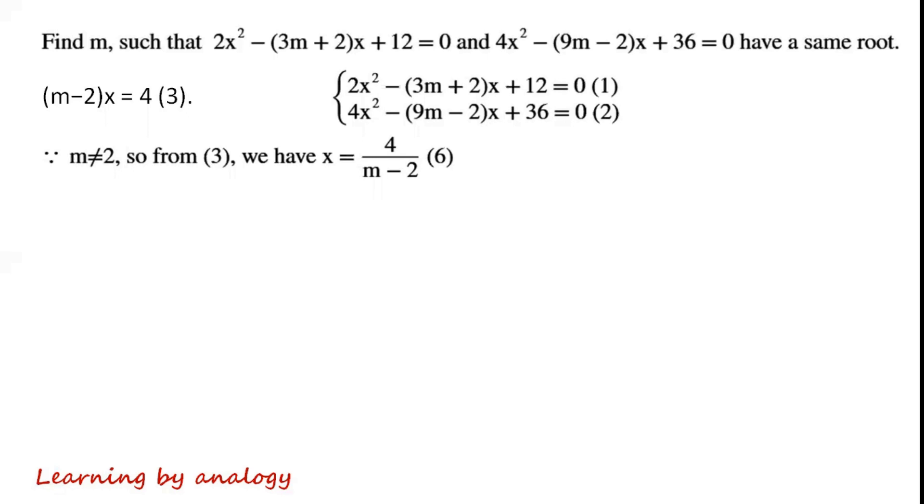Because m doesn't equal 2, so from equation 3 we have x equals 4 over m minus 2. Now we can substitute equation 6 in any one of the simultaneous equations. Now we substitute equation 6 in equation 1.